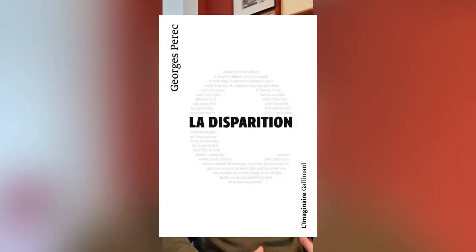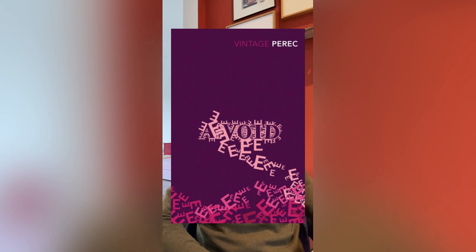Welcome back. Last week, I reviewed a book called La Disparition by Georges Perec, which translates into English as A Void. This book was super unusual for a very simple reason, which was that for 300 plus pages of this novel, the letter E was not used once.